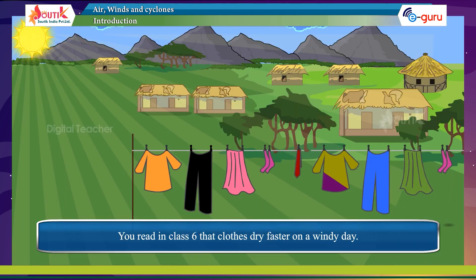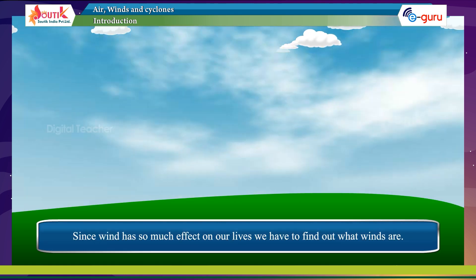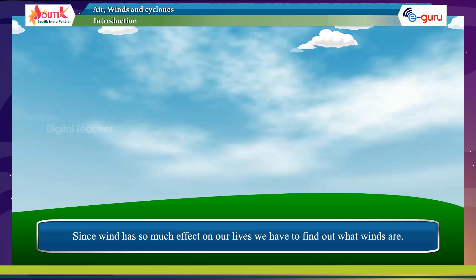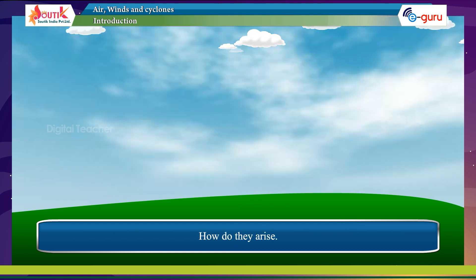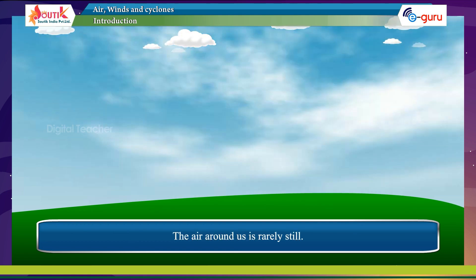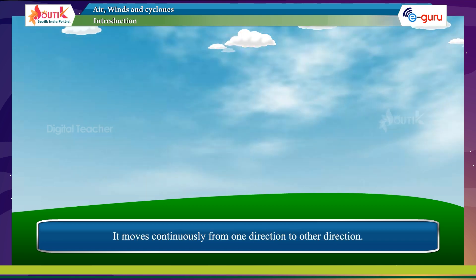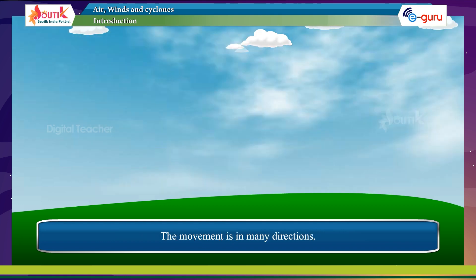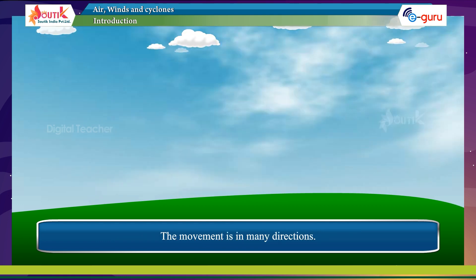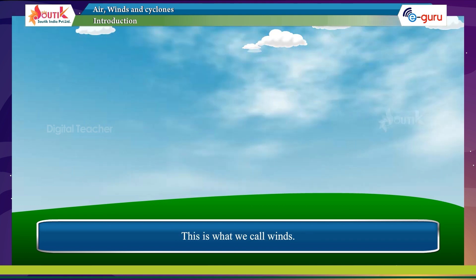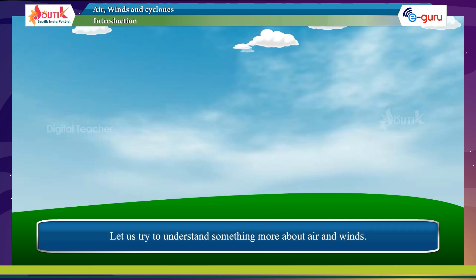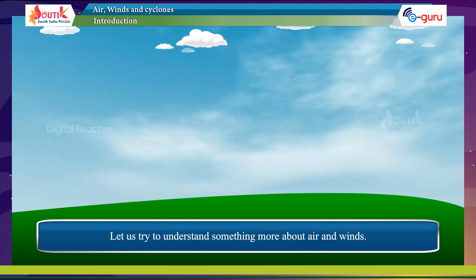You read in class 6 that clouds dry faster on a windy day. Since wind has so much effect on our lives, we have to find out what winds are and how they arise. The air around us is never really still — it moves constantly from one direction to another, in many directions. This movement is what we call wind. So we know that wind is moving air.